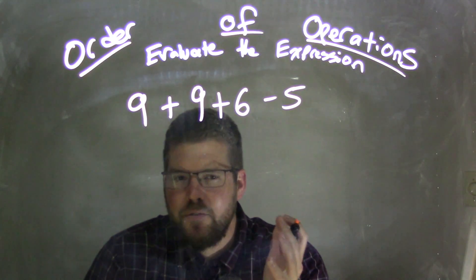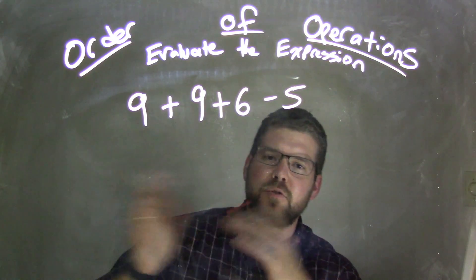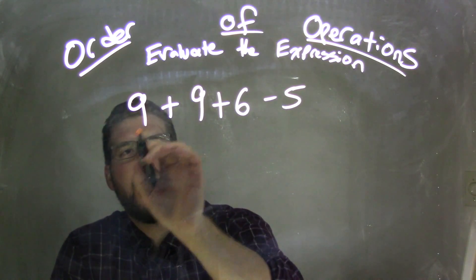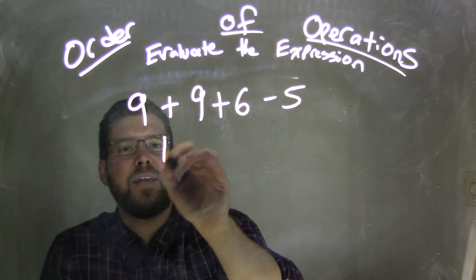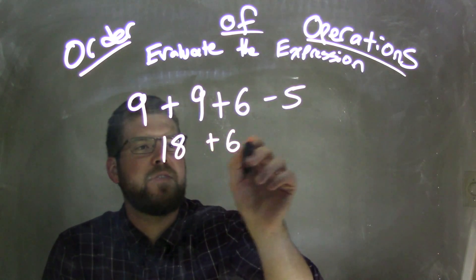So they're on the same level, so now we're going to deal from left to right. So we start with a 9, 9 plus 9, well, 9 plus 9 is 18, and then we bring down the rest, 6 minus 5.